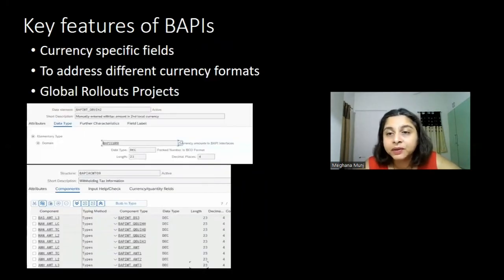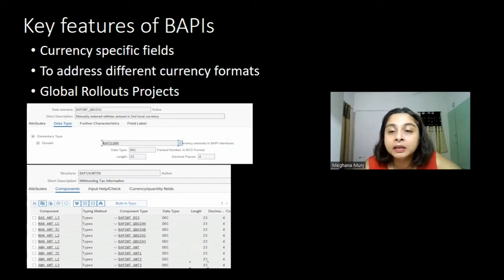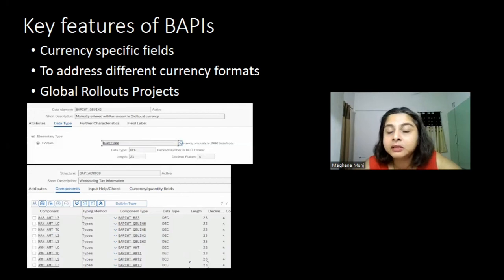The next is currency-specific fields, and this is a very particular error that occurs in global rollouts. Typically what happens is that you start your global rollout from the US region or Europe region and then later roll it out to other countries which have different currency formats. Euro and US/Europe currencies usually have two decimals, so you develop your external interface for a BAPI or OData service with only two decimal places.